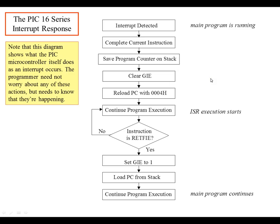Here's a bit more detail about how an interrupt works. An interrupt is detected, you complete the current instruction, you save the counter on the stack, you clear the global interrupt enable — so you don't get any more interrupts — and you load the program counter with 0004H, which is the interrupt vector. You then continue program execution until you get a return-from-interrupt instruction. Once you get that, you re-enable global interrupts to 1 and load the PC from the stack, continuing where you left off. That's basically how the interrupt process works in the PIC 16.